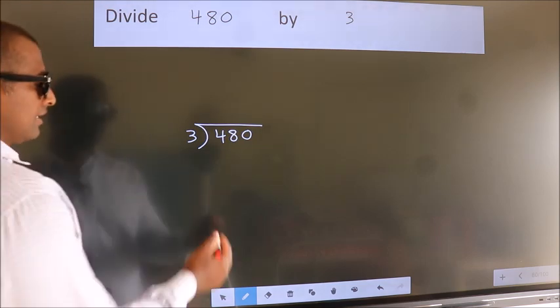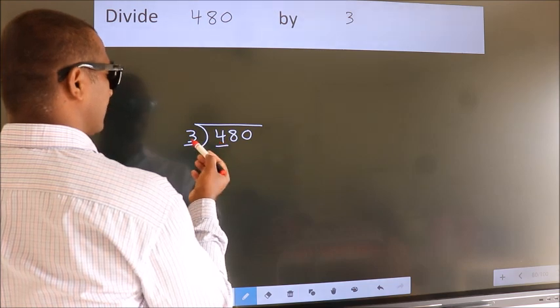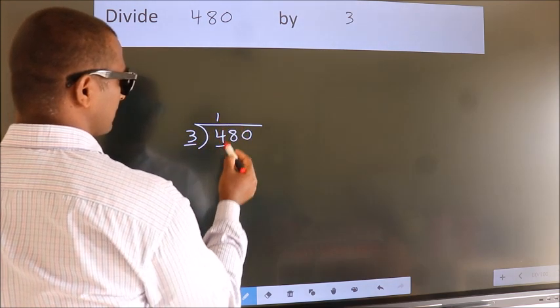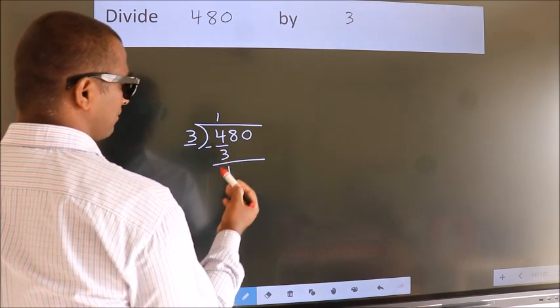Next, here we have 4, here 3. A number close to 4 in the 3 table is 3 once, 3. Now we subtract and get 1.